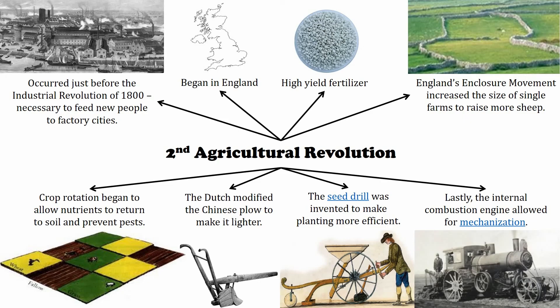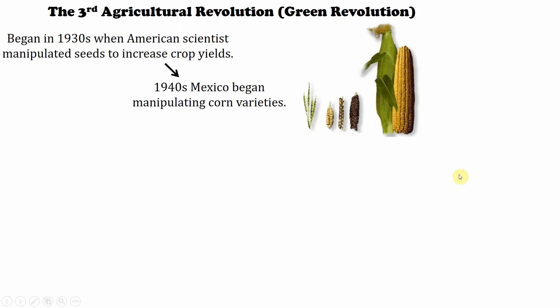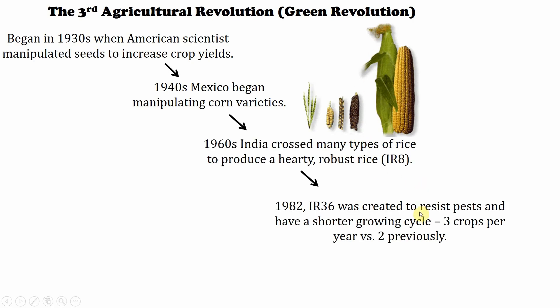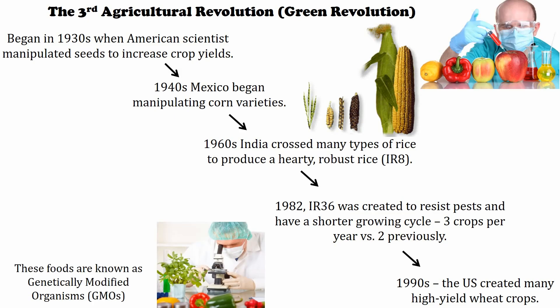Later we'd have the first mechanized tractors. The goal of the second agricultural revolution is using machine and scientific know-how to increase food production output. The third agricultural revolution is also known as the Green Revolution, starting in the 1930s. They wanted to start manipulating genes to increase crop yields. Mexico started messing with corn varieties, taking it from teosinte — like a grass — slowly getting it to what we know now. In India, they wanted more robust rice that takes less time to grow, giving them three growing seasons instead of two.